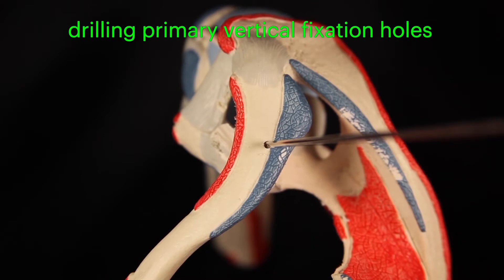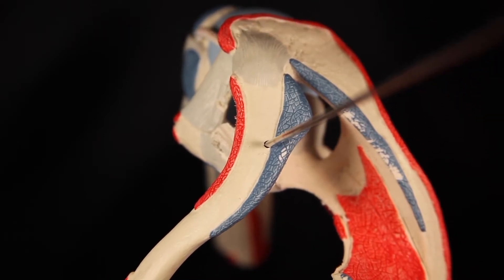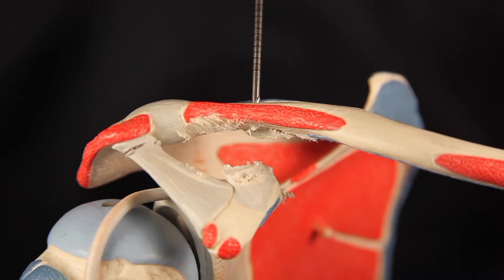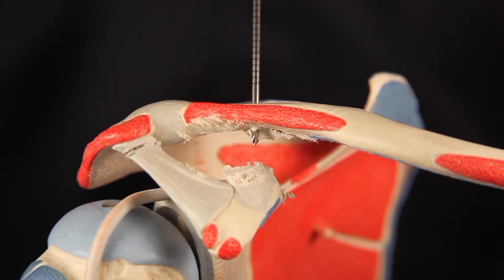A 2.4 millimeter drill hole is made in the midline of the clavicle, directly in line with the base of the coracoid, approximately 35 millimeters from the end of the clavicle.